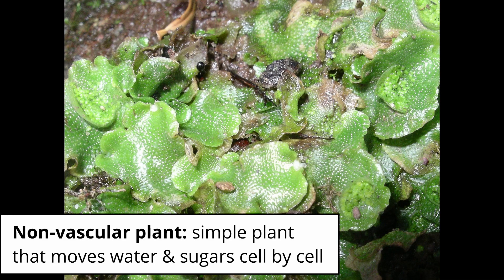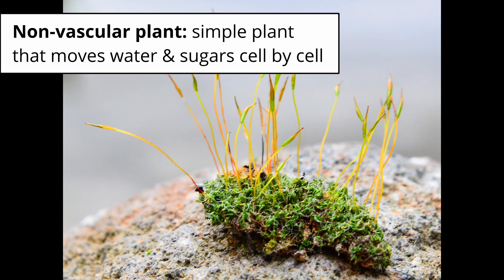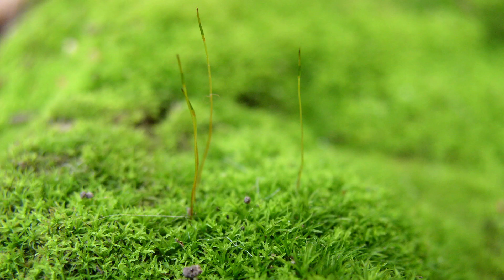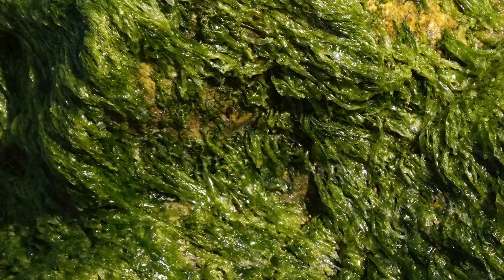Starting more broadly, non-vascular plants are simple plants. They don't have sophisticated ways of moving water or sugars around, so they just go cell by cell. And if you think about how inefficient that is, it makes sense that these plants stay pretty small. Think about moss and algae.